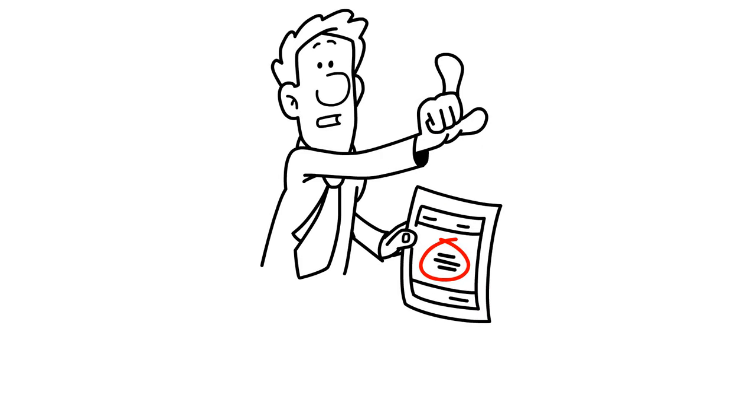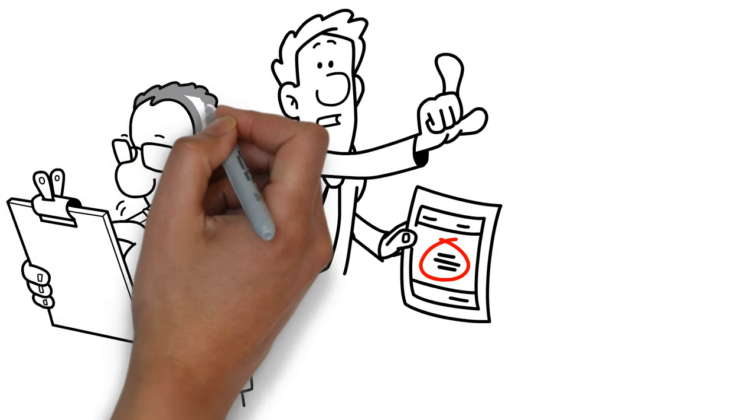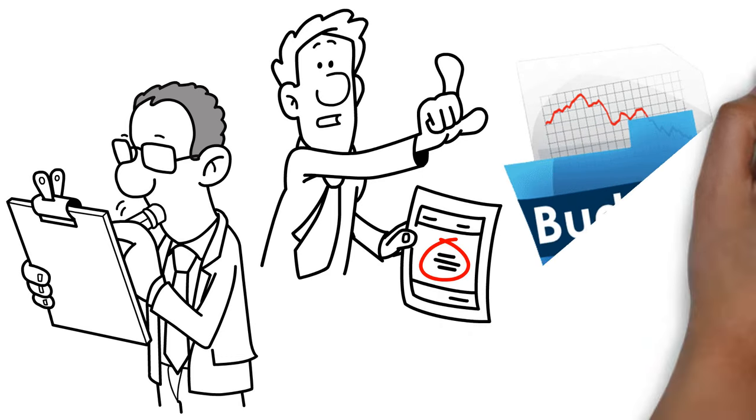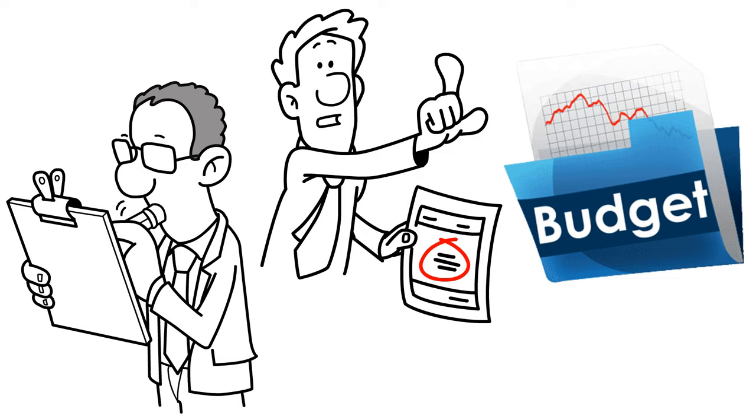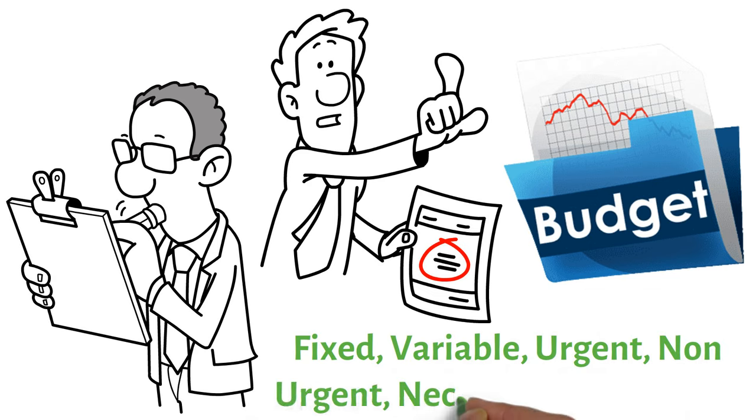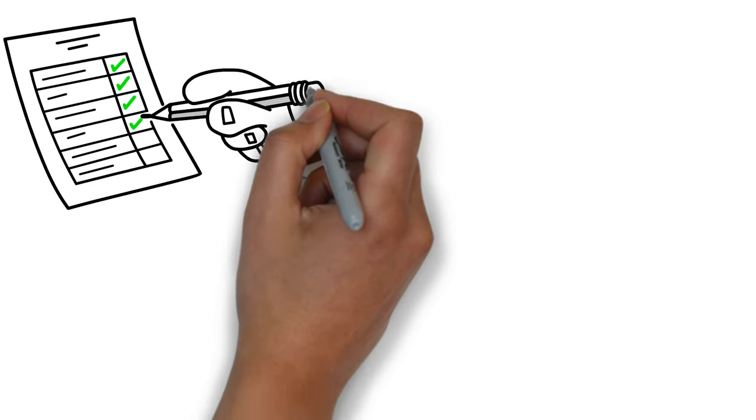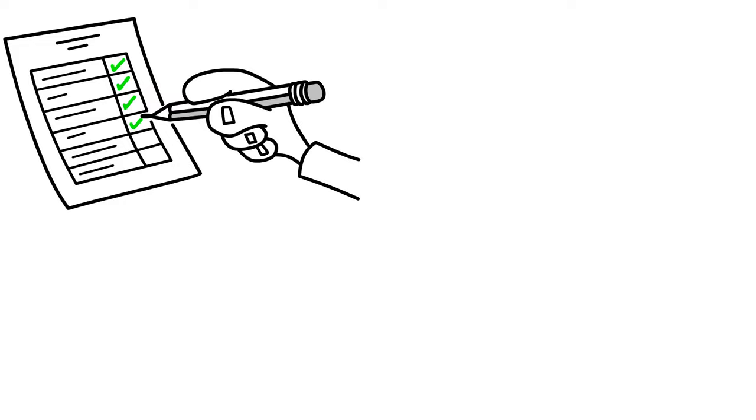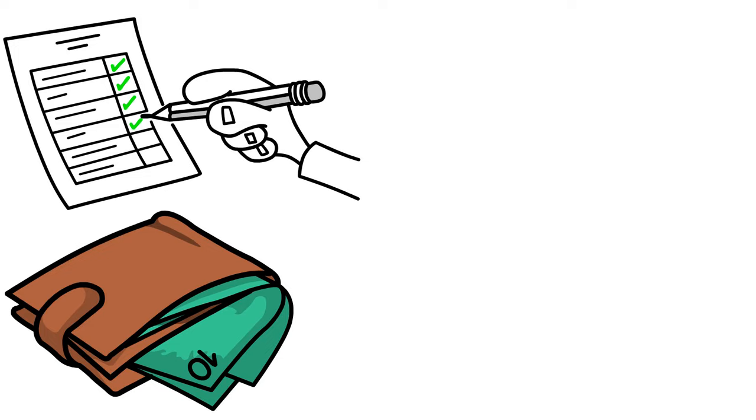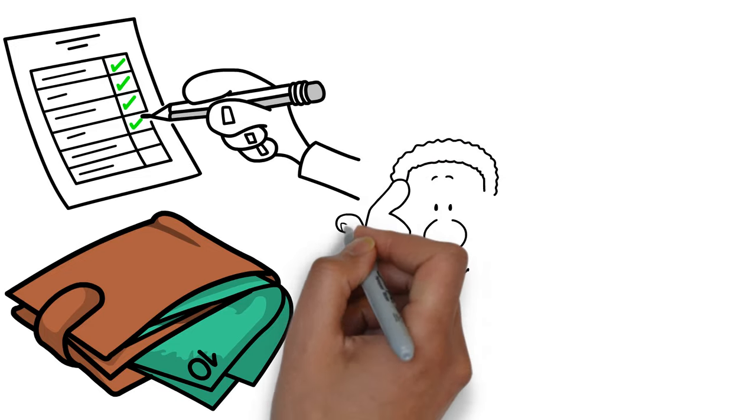Consider making a spending plan. Your financial flows will be out of your control until you create a budget. An easy way to see how much money is coming in and going out is using a budget. The first step is to sort your costs into four groups: fixed, variable, urgent, non-urgent, necessary, and luxury. Then, decide which ones you can do without and which ones you can't. By using this method, you may compile a comprehensive list of all your spending. Gaining control of things becomes easier when you go from an abstract to a tangible state of mind.